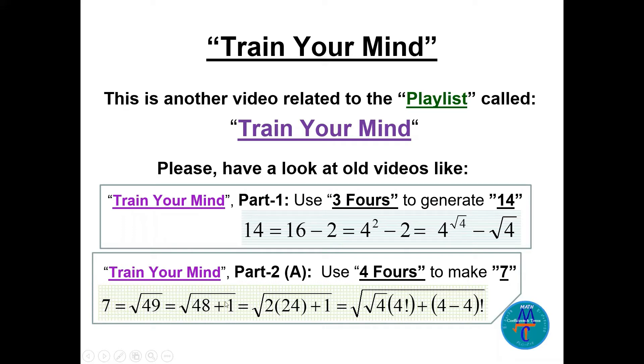This is equal to square root of 48 plus 1. Now 48 I can take and say 2 times 24. The 2 is square root of 4, 24 is 4 factorial like 4 times 3 times 2 times 1, plus 1. Here the one I can make it zero factorial because zero factorial is equal to 1, and zero factorial I can write as 4 minus 4.